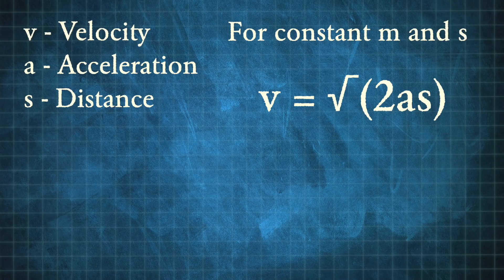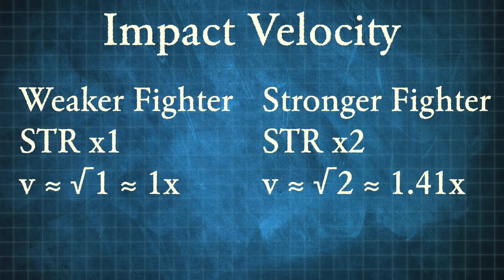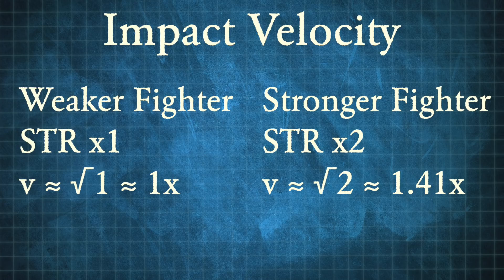Knowing the relative acceleration, we can look at this formula for velocity and can see that change in impact velocity is proportional to the square root of the change in acceleration. So for a fighter with double the strength, his impact velocity would be the square root of 2, or 1.41 times that of the weaker fighter.